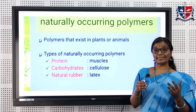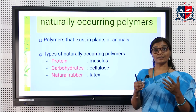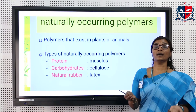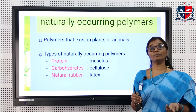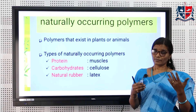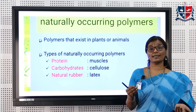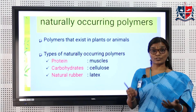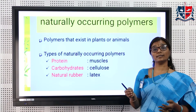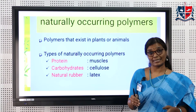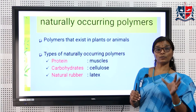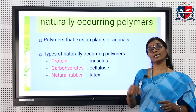Chitin is a wonderful material — a precious gift from nature used in various applications, especially in the biomedical field. Natural rubber, proteins, starch, and cellulose are also natural polymers. Starch is made up of alpha-D glucose and cellulose is made up of beta-D glucose. So, based on origin, polymers can be classified into two: natural polymers and synthetic polymers.